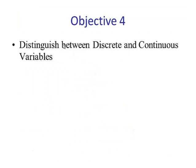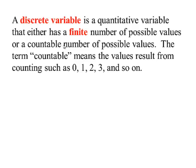Let's look at objective number four: distinguish between discrete and continuous variables. A discrete variable is a quantitative variable that has a finite number of possible values or it has a countable number of possible values.